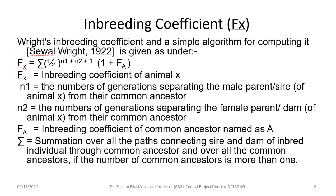Wright's inbreeding coefficient and a simple algorithm for computing it is given as: Fx = summation over all paths of (1/2)^(n1 + n2 + 1) multiplied by (1 + Fa). Here, Fx is the inbreeding coefficient of animal X, n1 is the number of generations between the male parent and the common ancestor, n2 is the number of generations separating the female parent and their common ancestor, and Fa is the inbreeding coefficient of the common ancestor A. The summation is over all paths connecting the sire and dam through common ancestors.